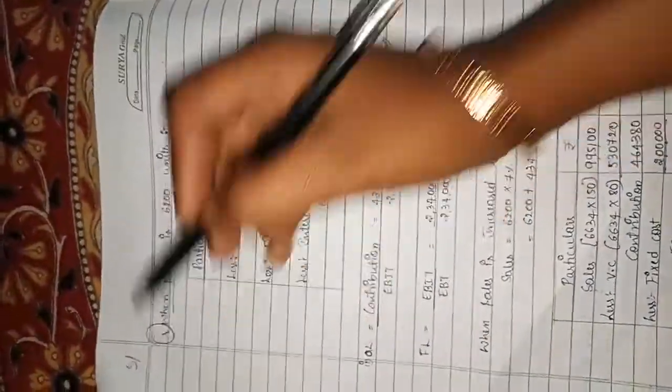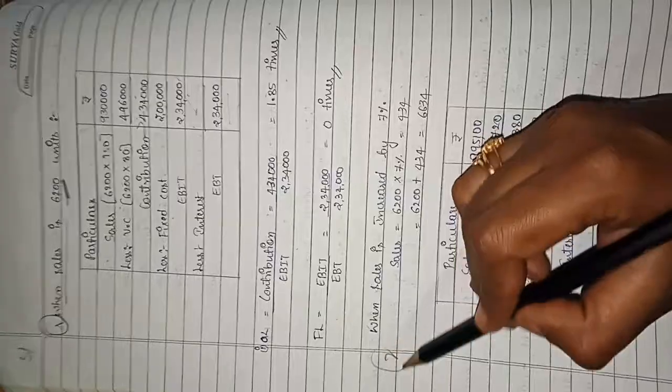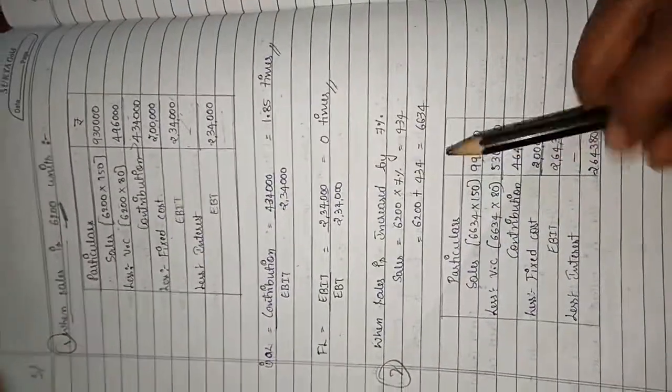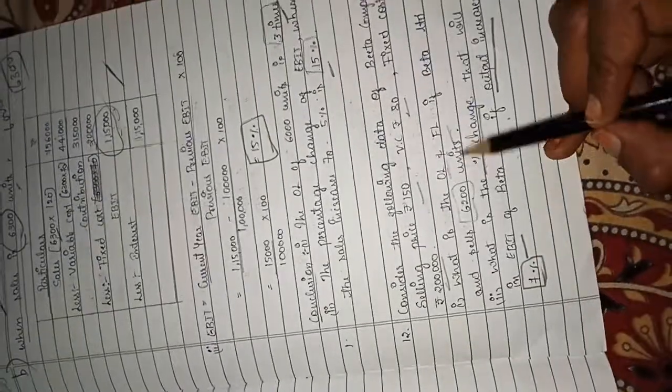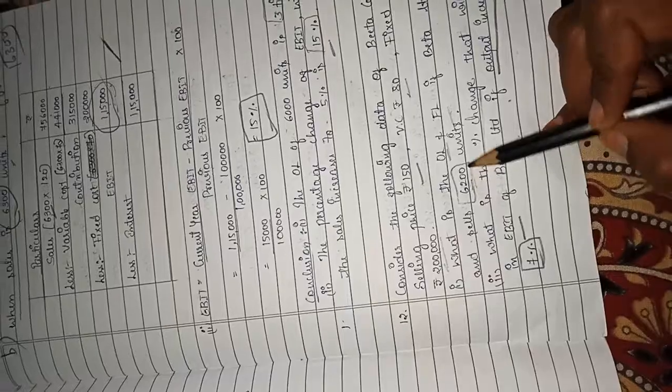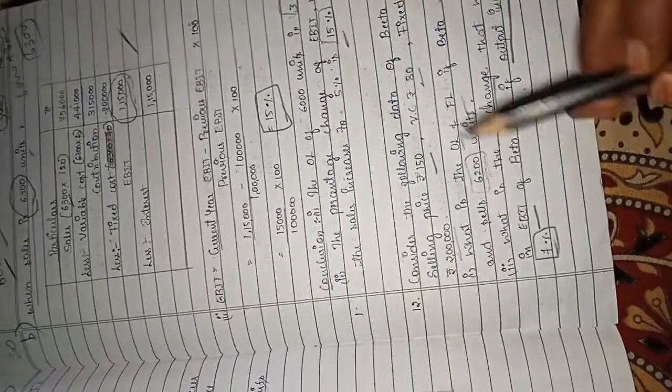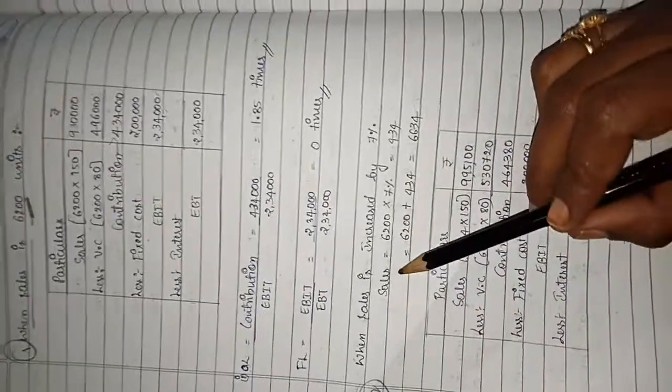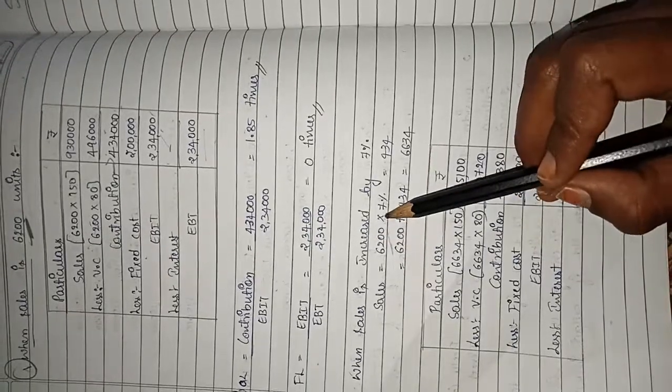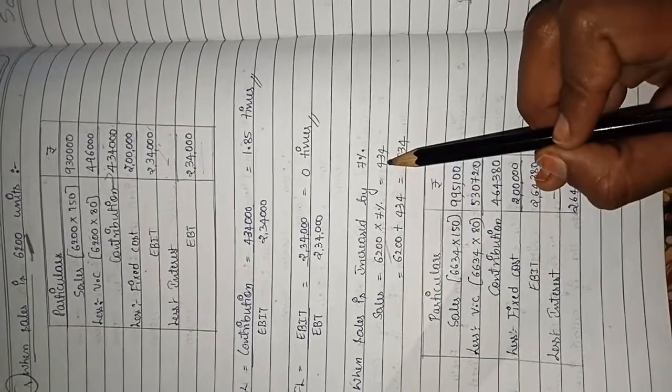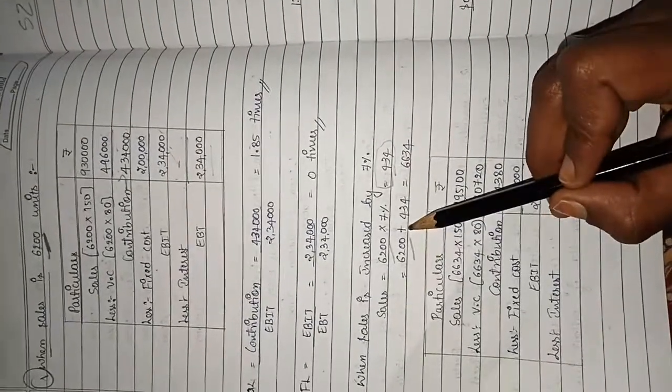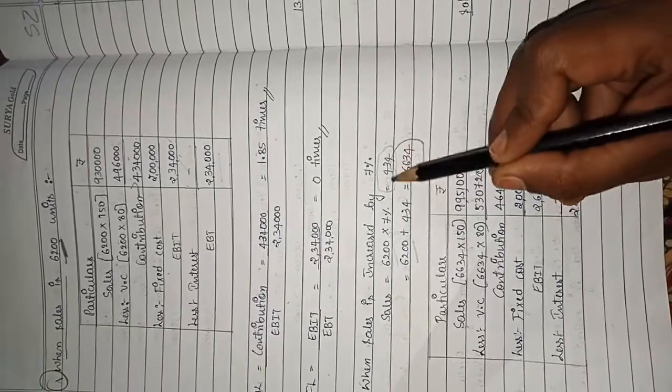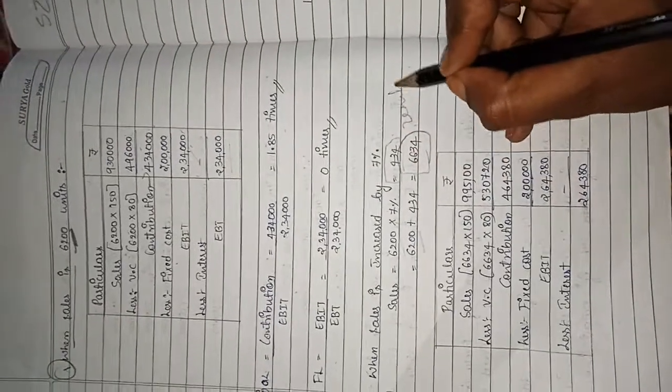Now coming to question number two. When the output increases by seven percent, and output is nothing but sales of 6,200 units, seven percent increase gives us 434 units. So 6,200 plus 434 equals 6,634 units. Now calculate for the second situation.